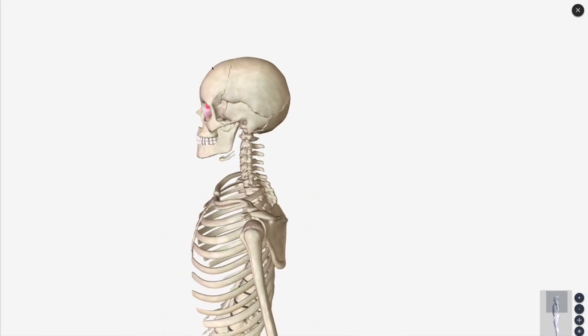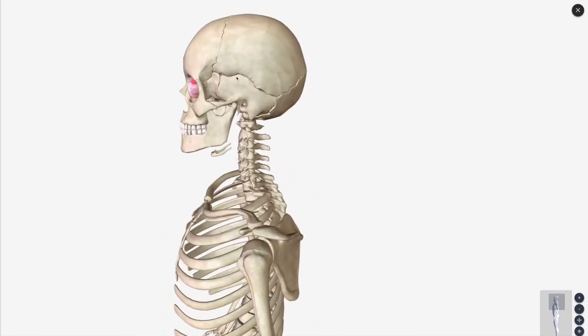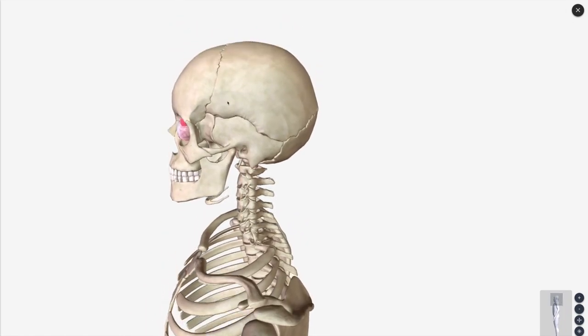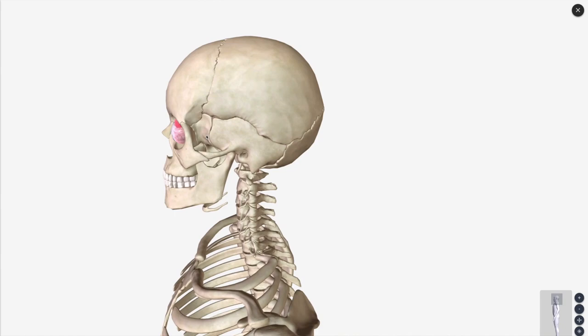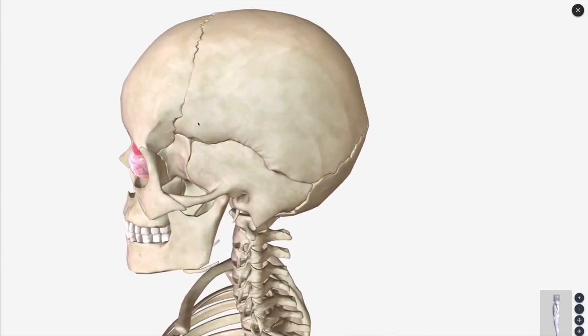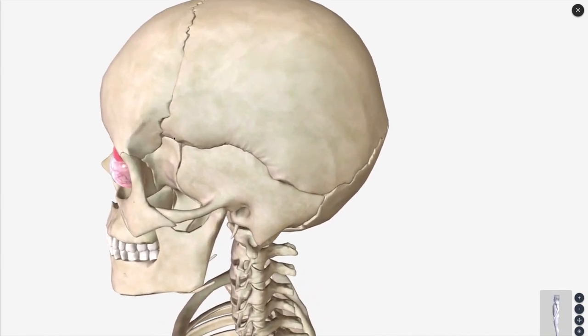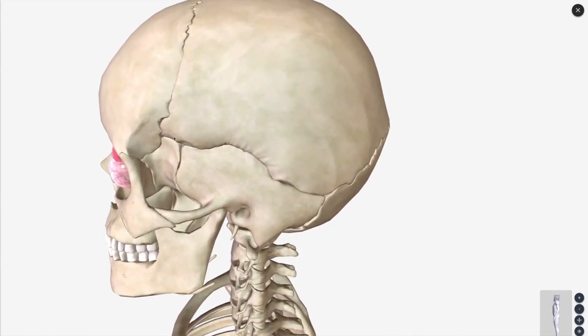So if you're looking at the side of the head here, and we move slightly up, we find this area of bone. That is going to be called the pterion.